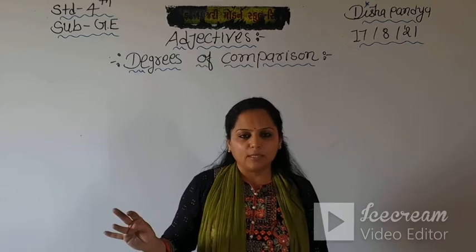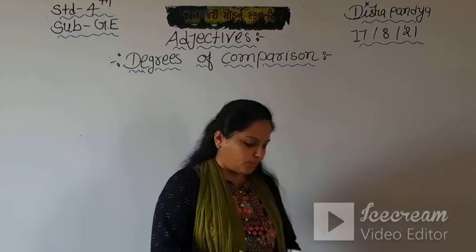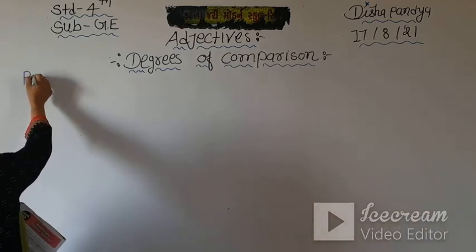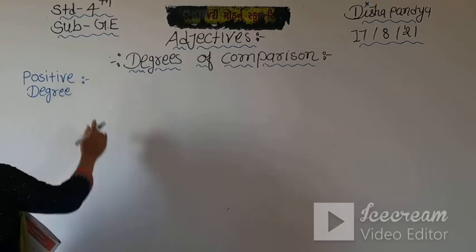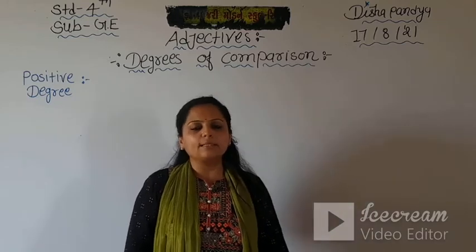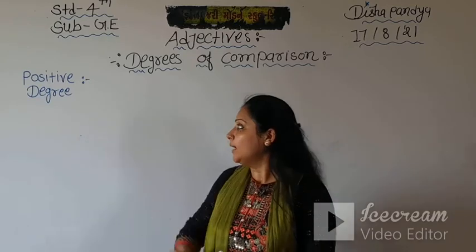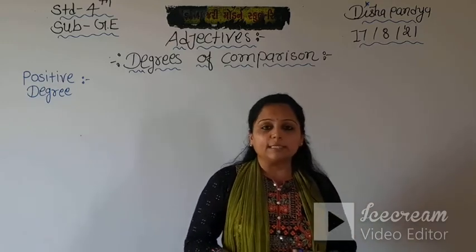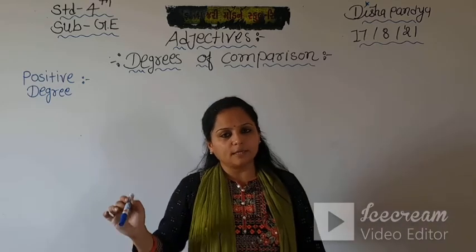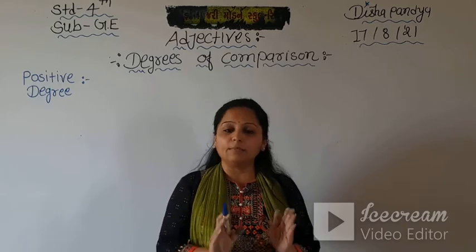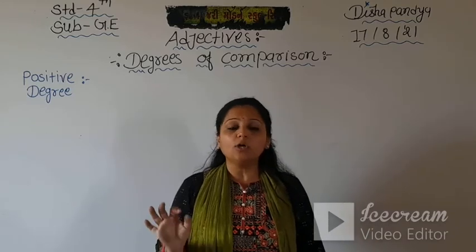We have to learn three degrees of comparison in this chapter: positive degree, comparative degree, and superlative degree. Now we are going to start learning about these degrees. First - positive degree. What is the meaning of positive degree? It is used when no comparison is made. When no comparison is required, which degree do we use? Positive degree. For example: 'Mercury is a small planet.' Here, only Mercury is being described.